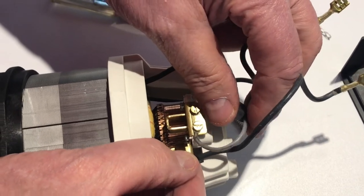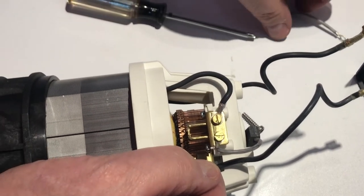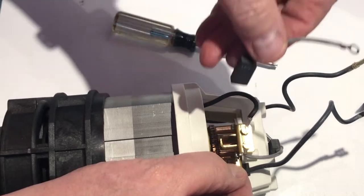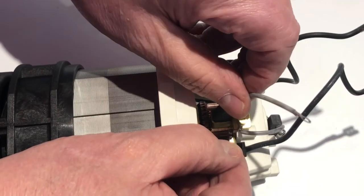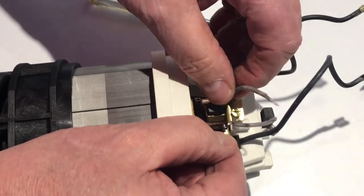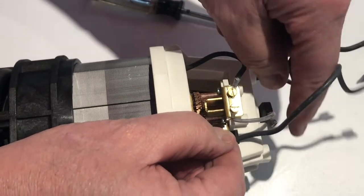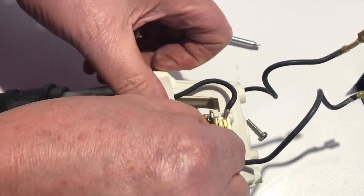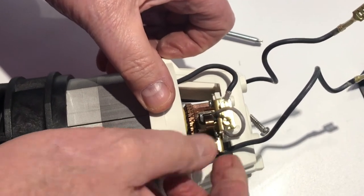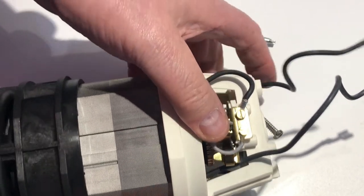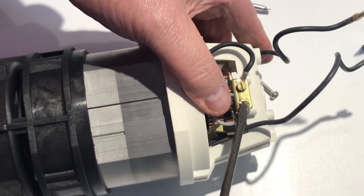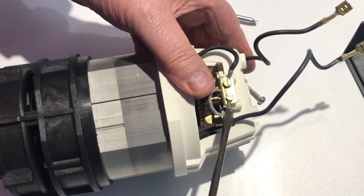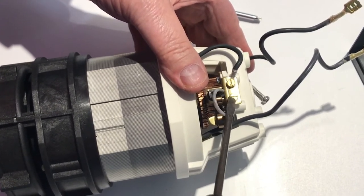Once you have that out, don't let go of the spring. Because you can get your new brush and just slide it back in. Once you slide the new brush back in there, then let your spring sit on the back of the brush. Then you can go in with your screwdriver here and remove the old brush wire and attach your new brush wire.